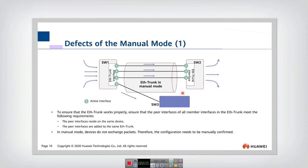So one defect is that actually to ensure the ether trunk works properly, the interface and the member interface should meet several requirements. So for example, first, all the peer interfaces should be resided on the same device. So here, if you configure one connection between S1, switch one and switch two, and another link between switch one and switch three, actually here in this scenario, these links cannot be manually aggregated together. We can only aggregate these three together.